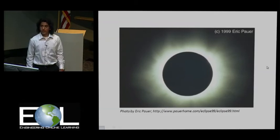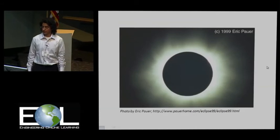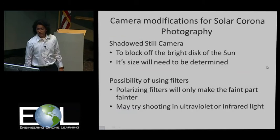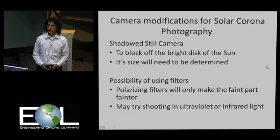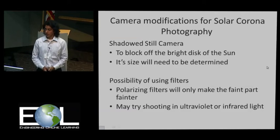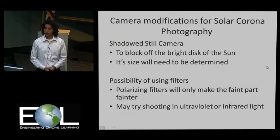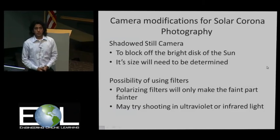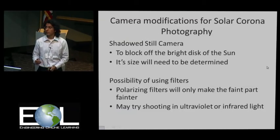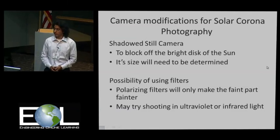In this picture, the moon acts like a shadow that blocks the intensity of the disk of the sun and focuses on the atmosphere around the sun. We will need some camera modifications for the solar chronophotography experiment, again because of the intensity of the disk of the sun. What I'm planning to do is use a shadow for the camera to block off the disk, but the size of the shadow will need to be determined, and this might require flying multiple payloads to observe the general trend. There is also a possibility of using filters to cut down the light, but that would make the relatively faint corona even fainter, so that is a problem we need to think about more.